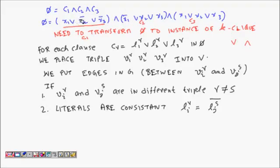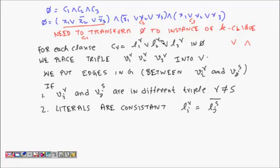Here is one instance: φ is (¬x1 ∨ x2̄ ∨ x3̄) ∧ (x1̄ ∨ x2 ∨ x3) ∧ (x1 ∨ x2 ∨ x3). So there are three clauses C1, C2, C3, each with three literals joined by OR, and the clauses themselves are joined by AND.